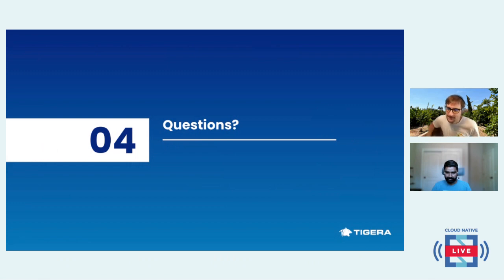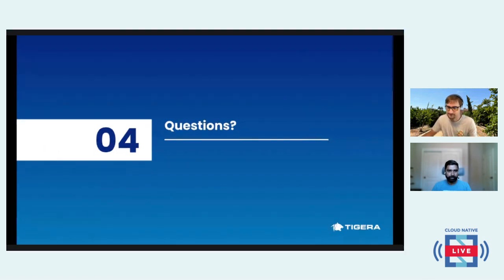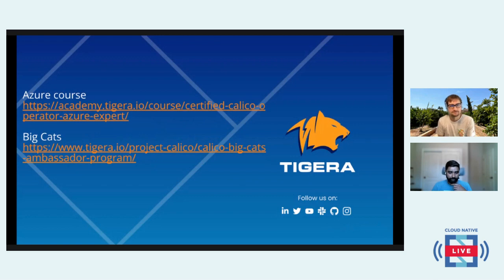Those are all the questions so far. If you have any more, please feel free to throw them into the chat. The slides and links will be available — I can publish them to this video description afterwards. One more thing I forgot to mention: there is actually an Azure course where you can become a certified Calico operator for Azure. You can find the links in the slides. There is also a Calico BigCats ambassador program with a link as well.